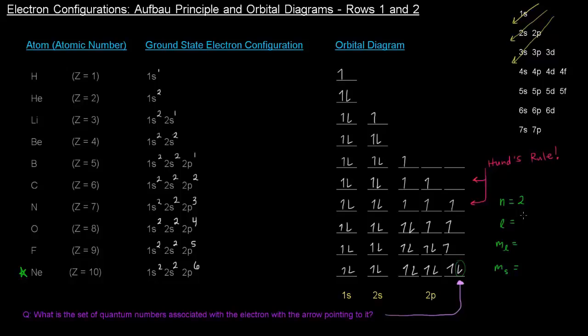So the n value is 2. The l, because of the p, is equal to 1. The m sub l, it's in the third orbital here. So if we think about these orbitals specifically, we've got negative 1 here, 0 here, and positive 1 here. So the m sub l value there is positive 1, and it's spinning downward. So minus one half. So this here is the home address for that specific electron.